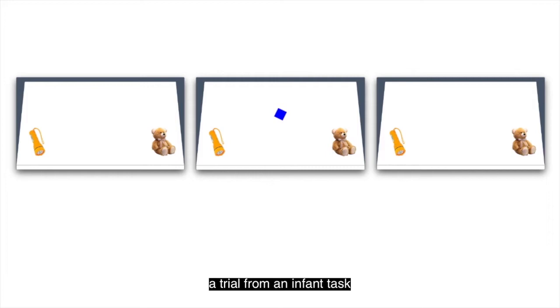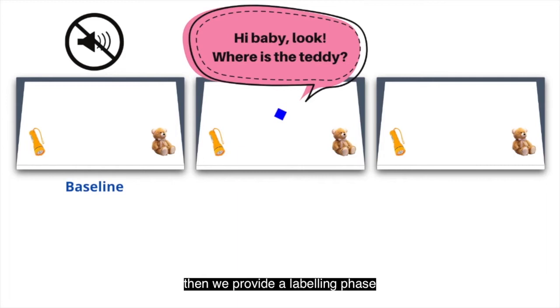Let me now bring your attention to the structure of our trial and explain how we analyze it. So first we briefly show two objects in silence to get a sense where babies attend to before either of the objects is labeled. This period is called baseline. Then we provide the labeling phrase—we ask about one of these objects. And finally, as soon as this labeling phrase ends, we start monitoring whether the presence of the word influenced how the babies are exploring the scene with their eyes. This period of the trial is called test.